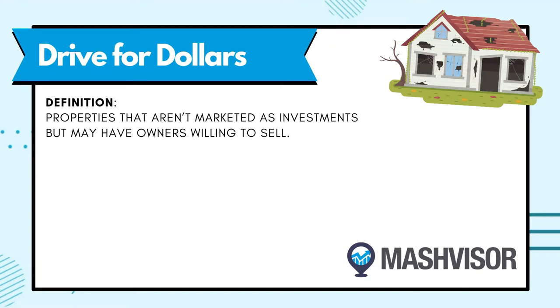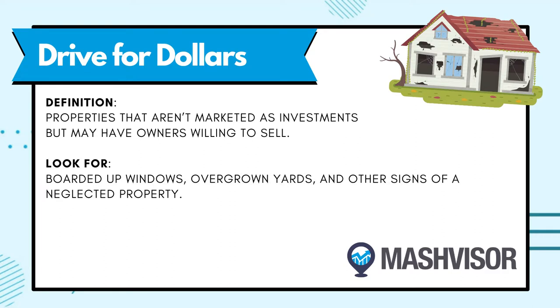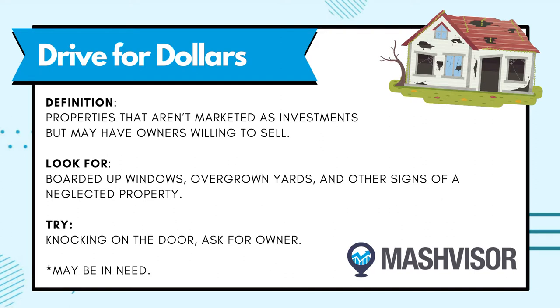So now that you know what kind of property you want, let's talk about where to find it. If you know a specific area you want to buy into, the first thing to do is to drive around that neighborhood. Look for properties that aren't being marketed as investments but may have owners that are willing to sell. This can be especially effective if you know the area well. Keep an eye out for boarded up homes, overgrown yards, and other signs of neglected properties. Many wholesalers have had a lot of success just walking up and knocking on the door and seeing if an owner of a property you're interested in is there to talk to.